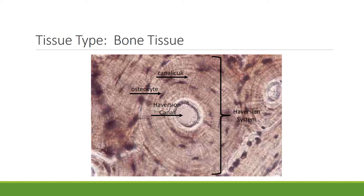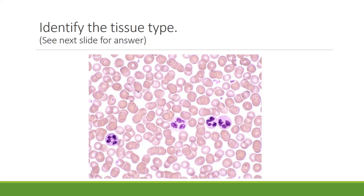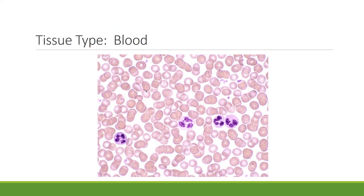Can you identify this tissue? This is bone tissue. You should be able to see the labeled parts: the Haversian system, the Haversian canal, and the osteocytes — all of which tell you it's bone tissue. Can you identify this tissue? This is a slide of human blood. You can see the largest cells, the leukocytes; the medium-sized and most numerous, the red blood cells or erythrocytes; and the smallest fragments, the platelets, also known as thrombocytes.